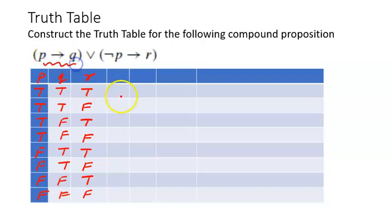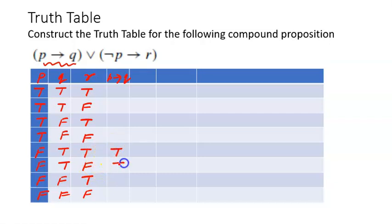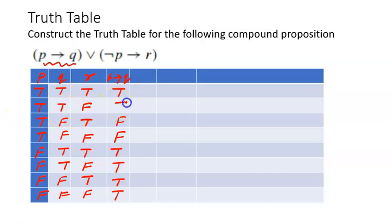First we have to write the truth table for P implies Q. We know that P implies Q is false only when P is true and Q is false. But if P is false, the truth value of Q does not matter. So the rows where P is false will all be true. For the rows where P is true: true and false gives false, true and false gives false, true and true gives true, true and true gives true.